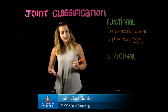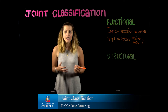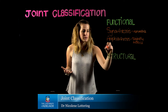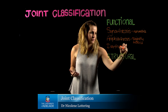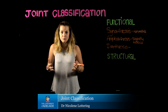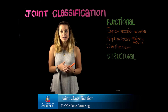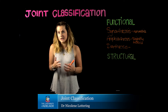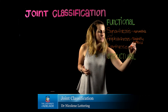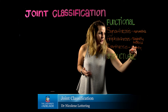Our most common types of joints, especially those associated with the limbs, are going to be our diarthrotic joints. These are going to permit the highest degree of movement possible, and we tend to classify this movement using the number of planes that a joint can move in. These are going to be highly mobile.